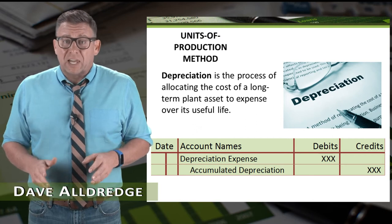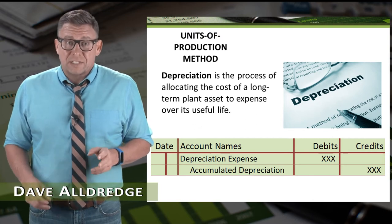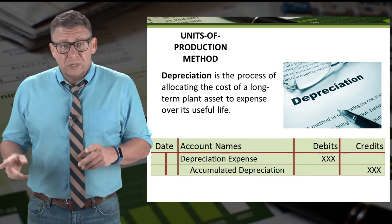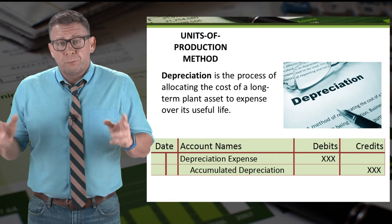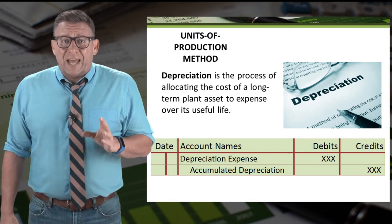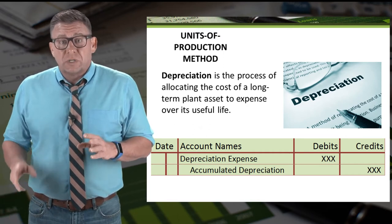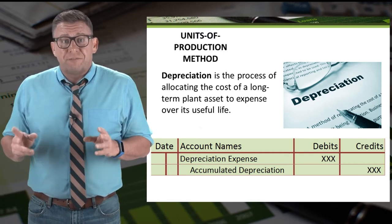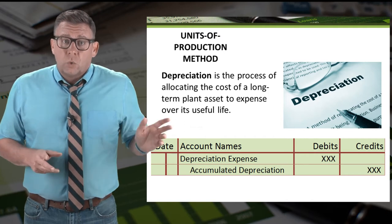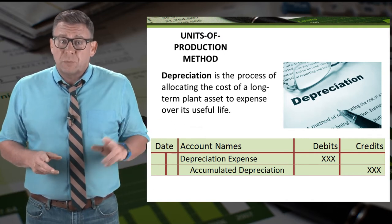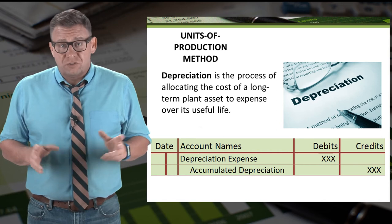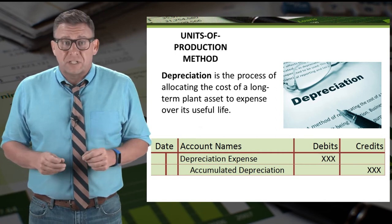Depreciation is the process of allocating the cost of long-term plant assets to expense over its useful life. We allocate asset cost to expense with the following adjusting journal entry: we debit depreciation expense and we credit accumulated depreciation for the amount of the expense.